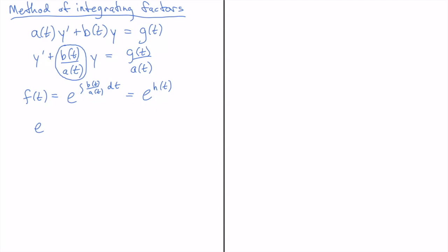So e to the h of t multiplied by y prime plus e to the h of t and now if h of t is the antiderivative of b of t over a of t then b over a has to be h prime. That's what it means for h of t to be the antiderivative of b over a.